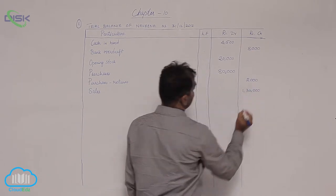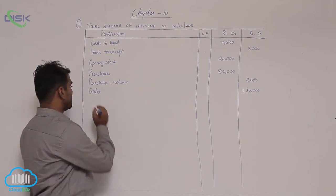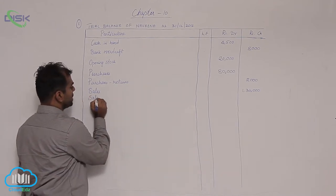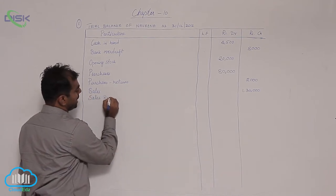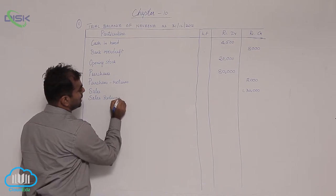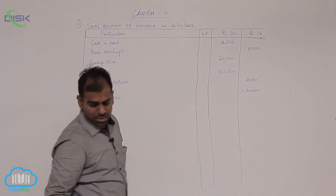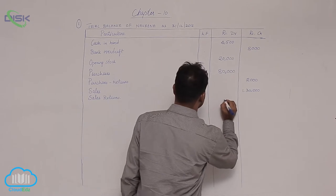Now next, you are given sales returns. So opposite of sales is your sales returns. So it will be showing debit balance. So 500 in the debit column.